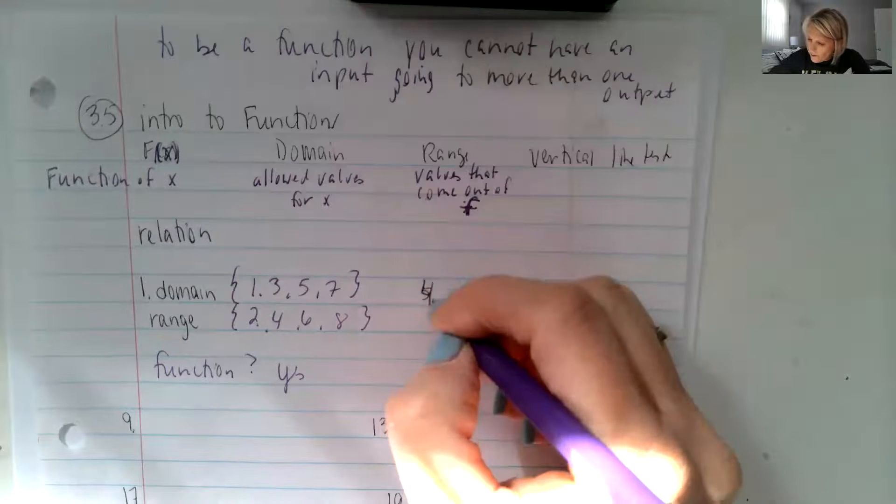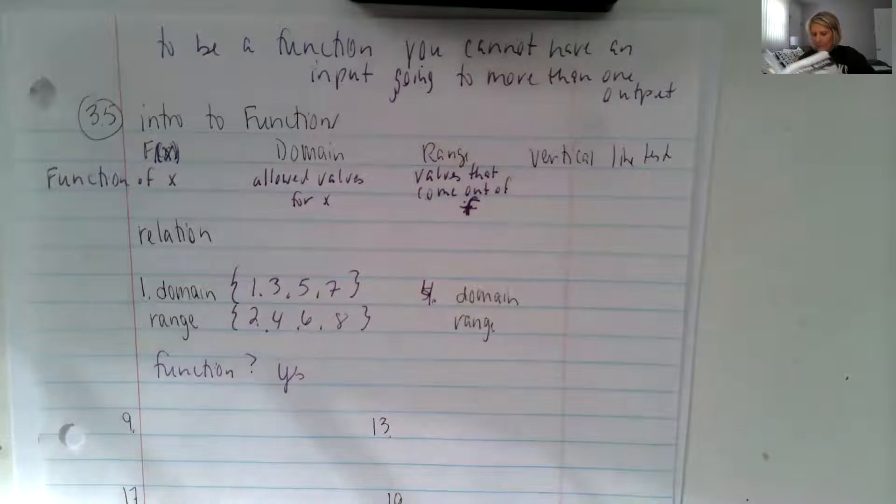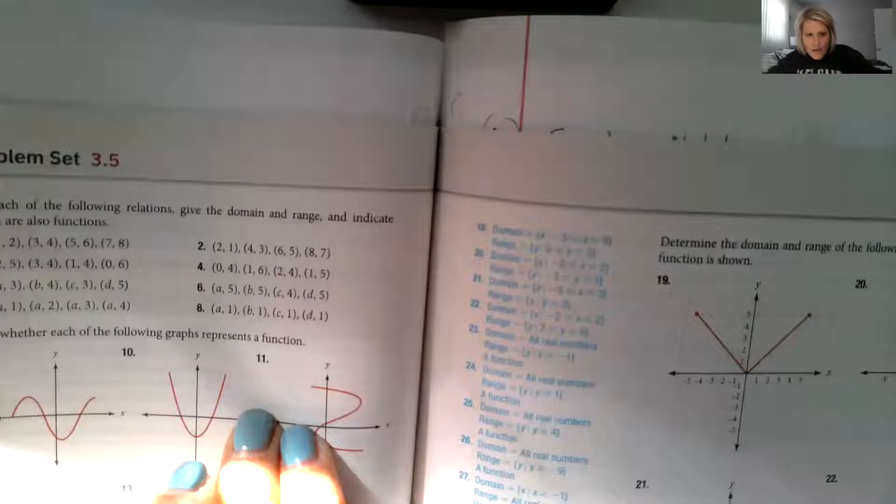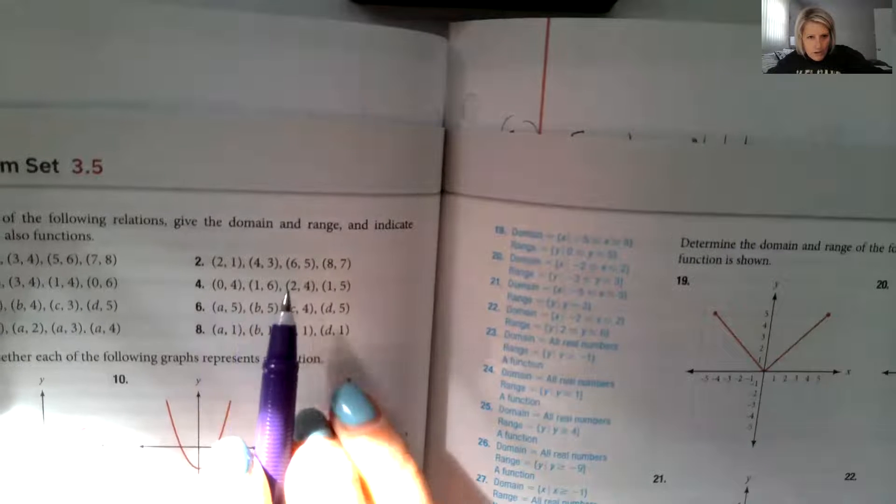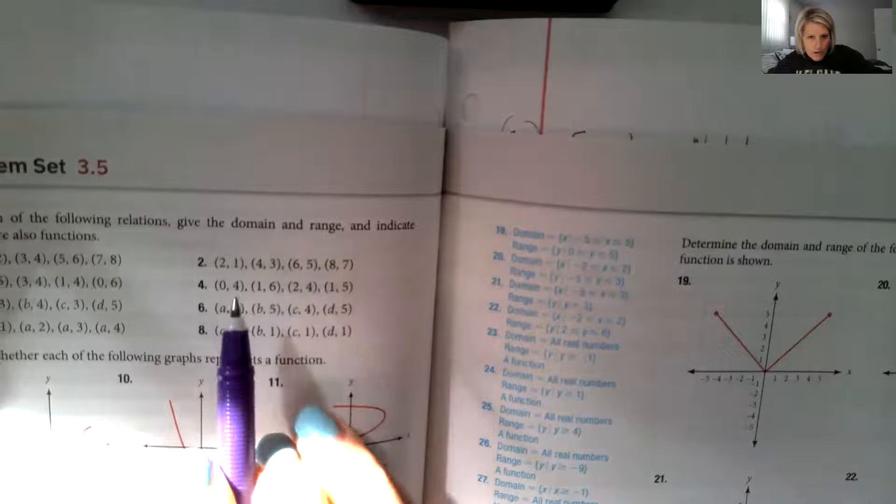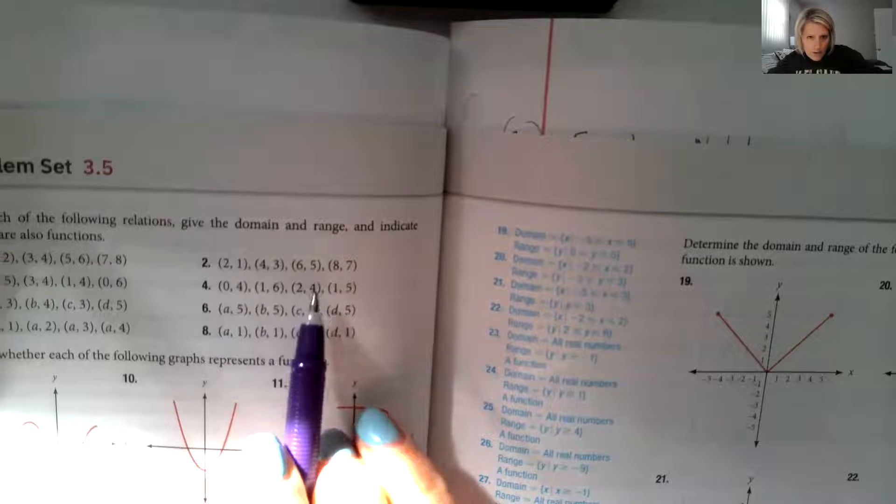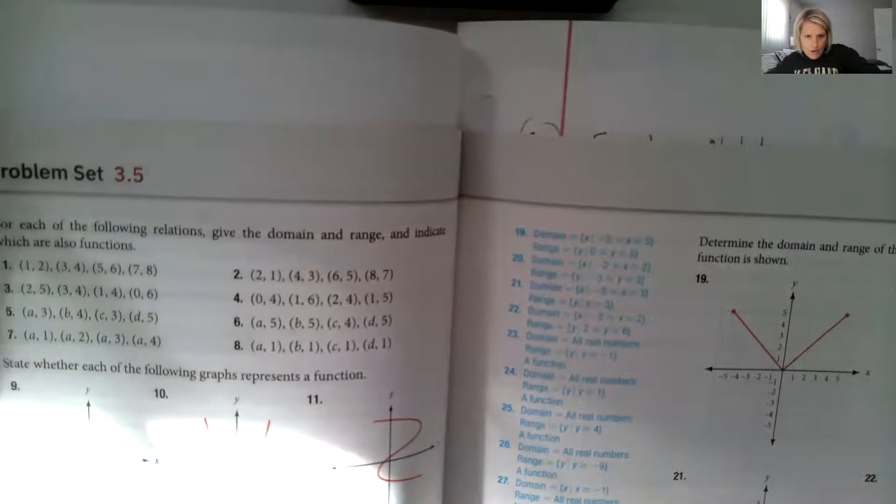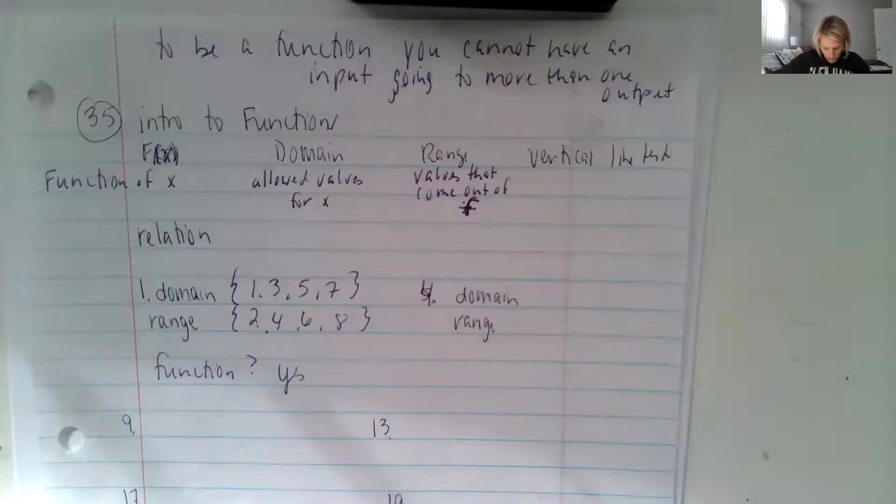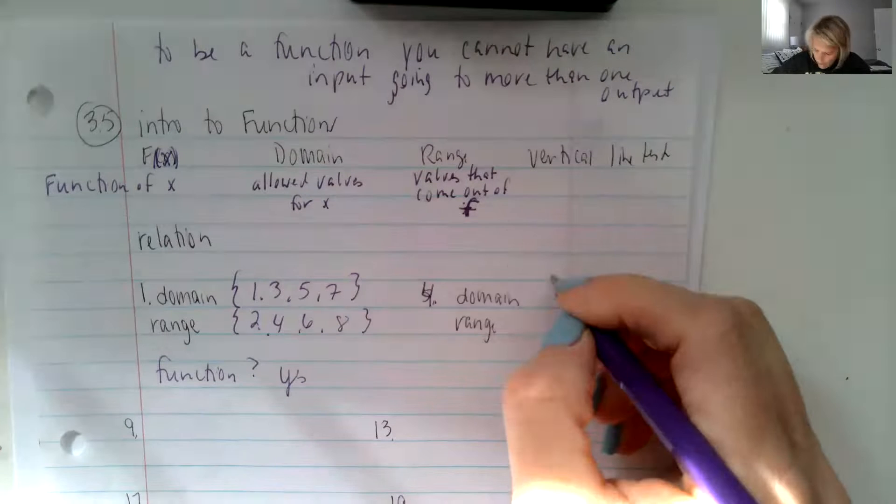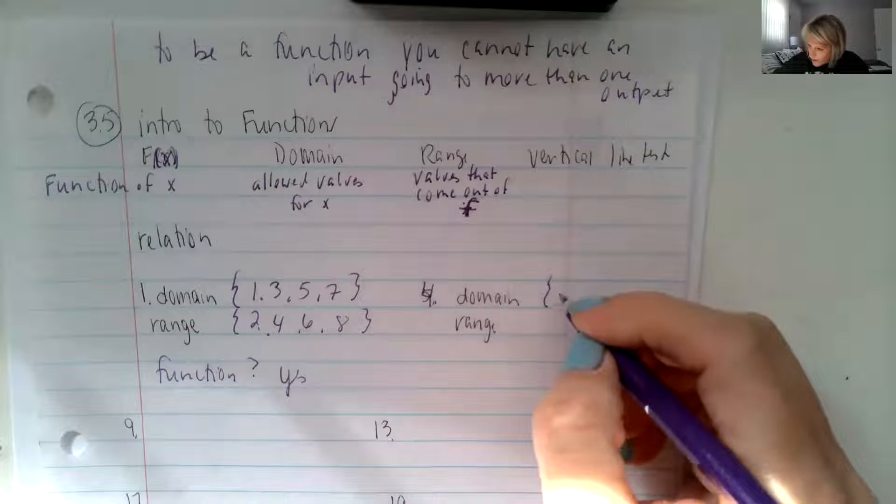Okay. So let's look at number four. Number five is not a good one. Number four, we have here zero, one, two, and one going to four, six, four, and five. So our domain on number four are the possibilities of zero, one, and two. And we don't have to list one twice.